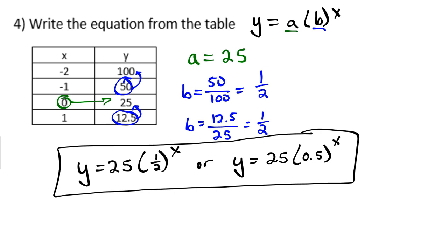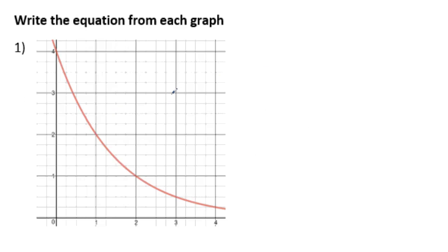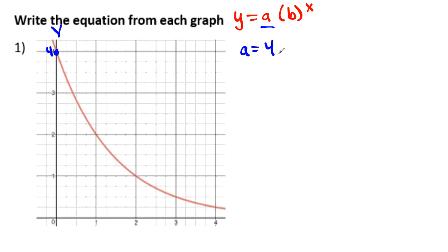Now let's look at a graph. It can be a little more difficult, but we can definitely get it done. Again, we want to get it in the standard form. We want to find our Y-intercept first — that's where the graph crosses the Y-axis — and it looks like right here the value is 4. So there's your A value: 4.